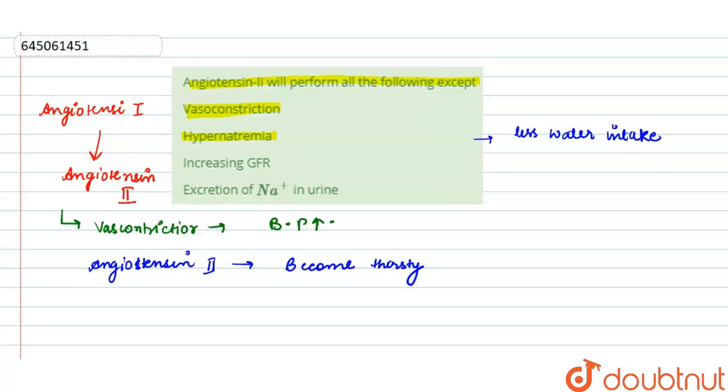So here third option says increasing GFR, that is glomerular filtration rate. So here GFR increases. So here this option is also incorrect.